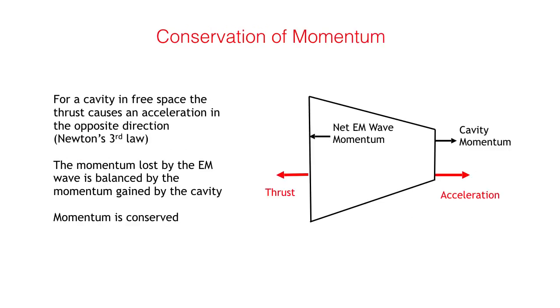To separate M Drive operation from magic, it must obey the law of conservation of momentum. Although inside the cavity Einstein rules, because the electromagnetic waves are traveling at relativistic velocities, to the outside world it is simply another Newtonian machine.